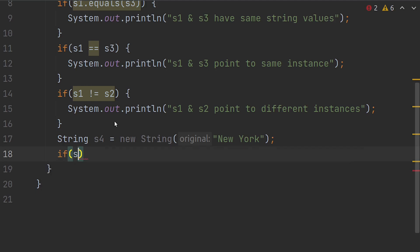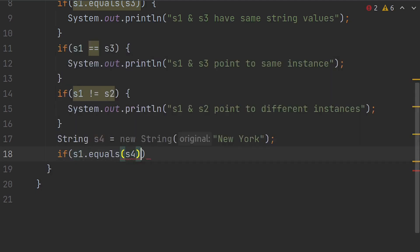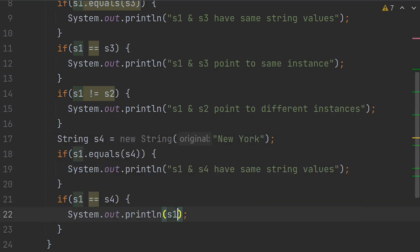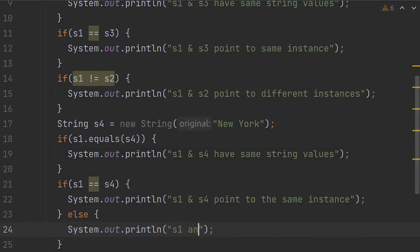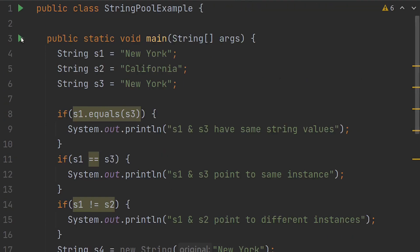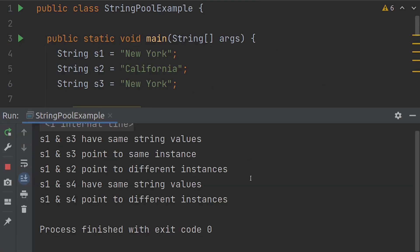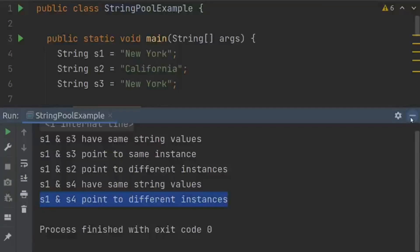So let's do if s1 dot equals s4, then the string values are same. If s1 equals equals s4, then the two string references point to same objects. Now let's run it. It says the string values are same, and s4 points to object instance inside heap. Perfect.